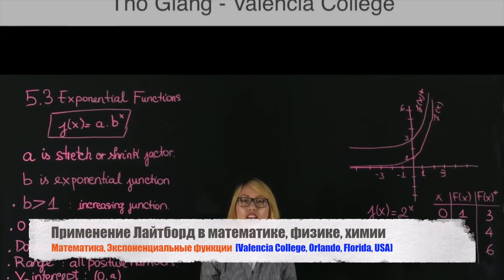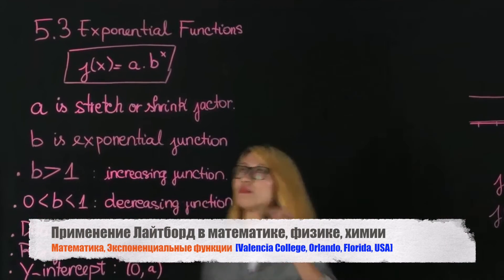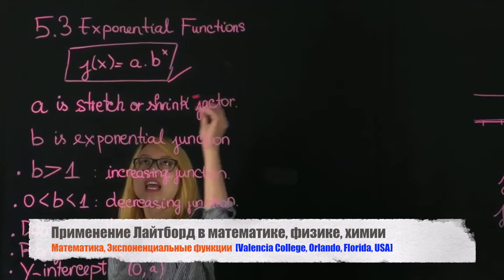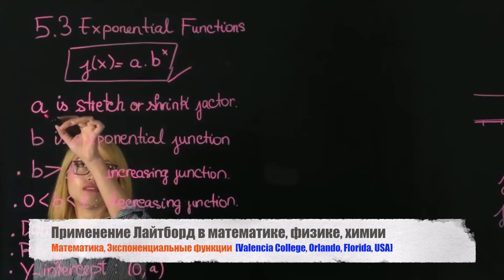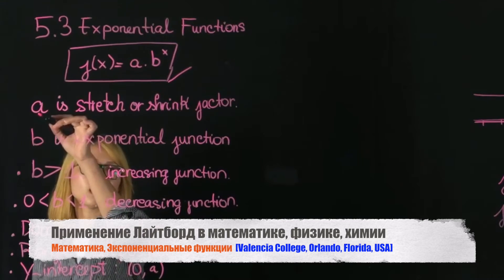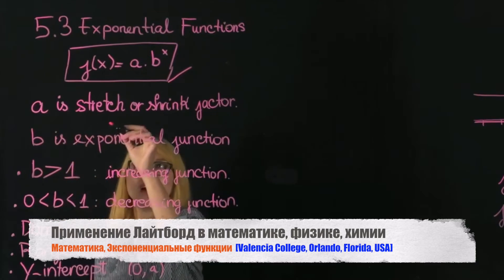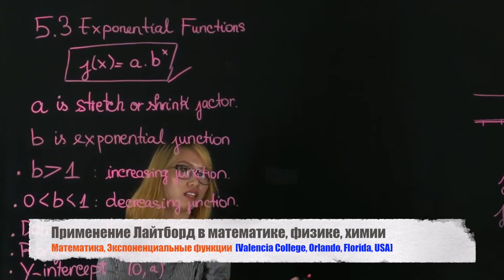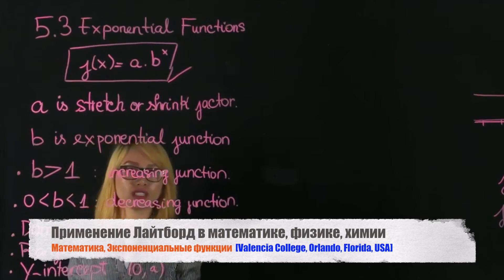Today we're going to learn about exponential functions. I want to show you the form of the exponential function. In this form you can see the A value — constant A — which tells you either a stretch or swing factor. And B is the base of the exponential function.